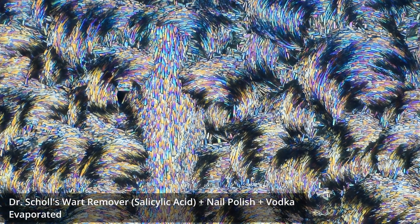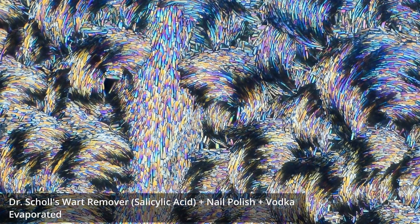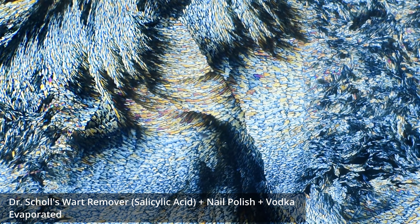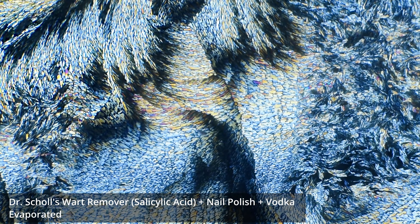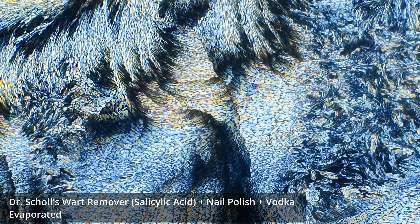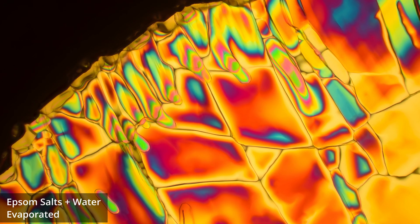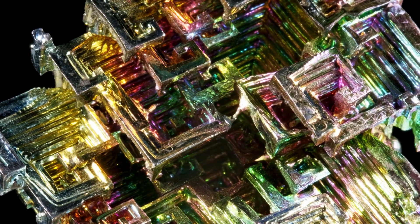The ordered structure of crystals gives them a unique optical property called birefringence. When polarized light passes through a crystal, it splits into two rays that take slightly different paths through the crystal and travel at different speeds. This creates the brilliant interference colors you see when we observe crystals between crossed polarizers, the same principle that reveals stress in glass or identifies minerals in geology.